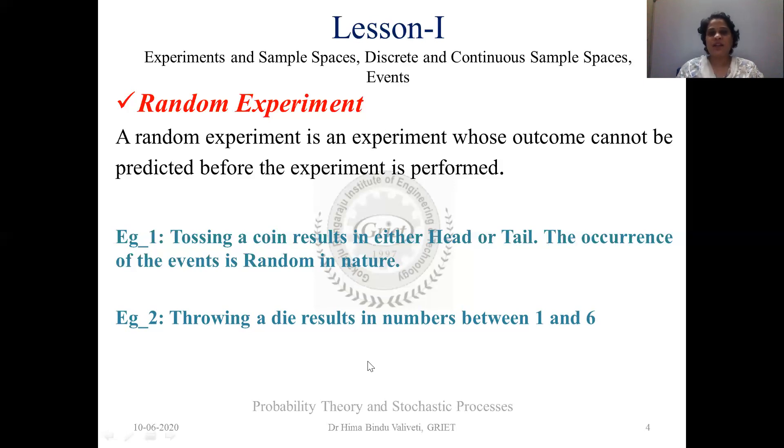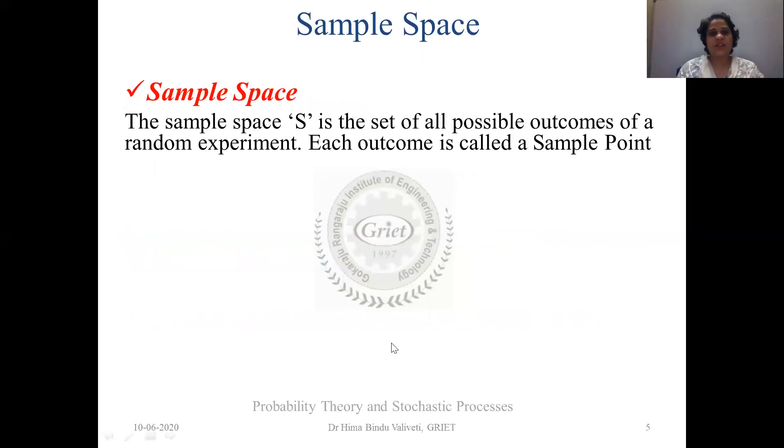So coming to what a sample space is, all of us must have known what sets is, isn't it? Set theory, right? You must have come across many examples of set theory. So a sample space, you can relate it as a complete set. What is a sample space? It's a set of all possible outcomes of a random experiment. So each outcome over there is known as a sample point.